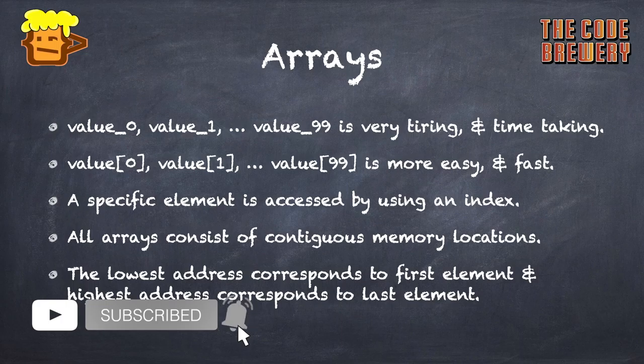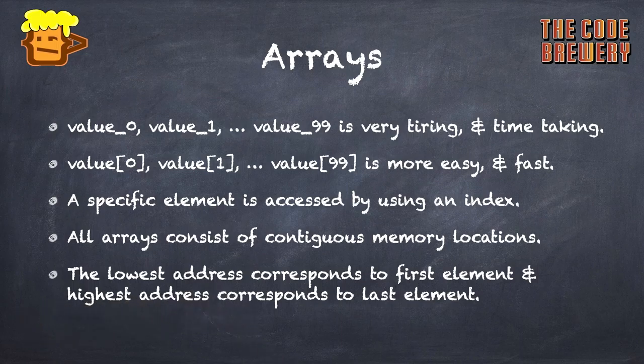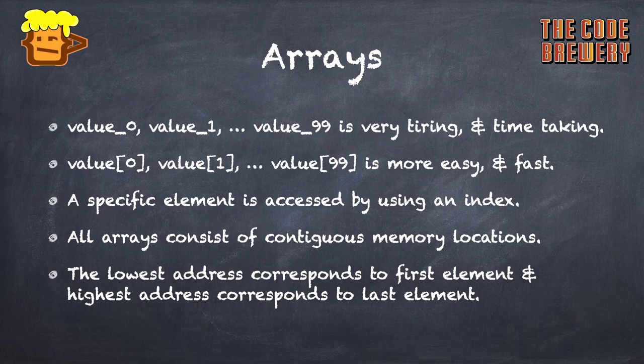A specific element is accessed by using an index — the numbers you see in the brackets are known as the index. All arrays consist of contiguous memory locations. The lowest address corresponds to the first element and the highest address to the last element. The lowest index is 0 and the highest is n minus 1, where n is the maximum size declared for the array.